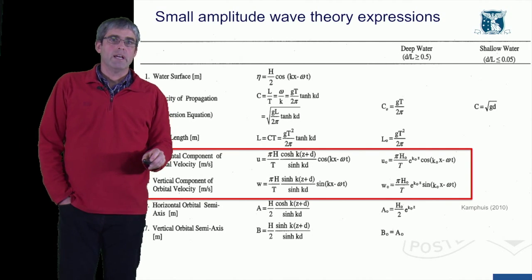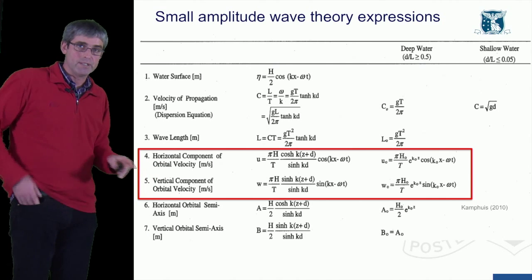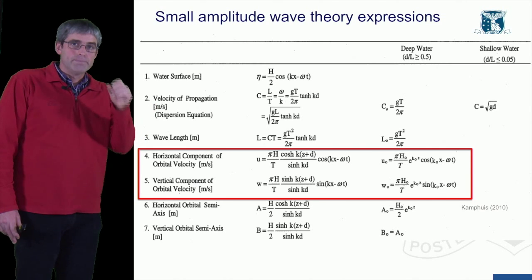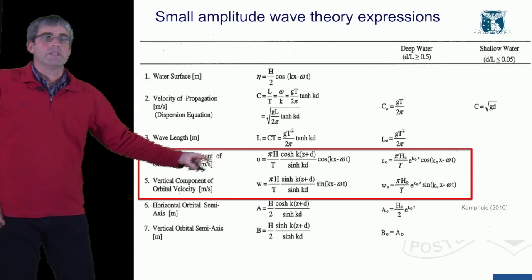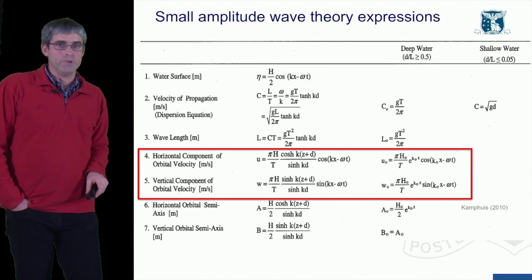And so we have these other terms here, the horizontal component of the orbital velocity. That's the velocity of that individual particle at a distance x and at a point in time t. It gives an equation for that horizontal velocity and that's the vertical component of the orbital velocity.